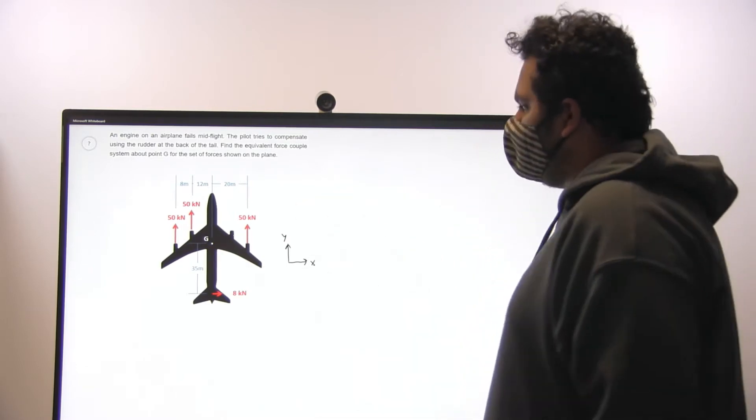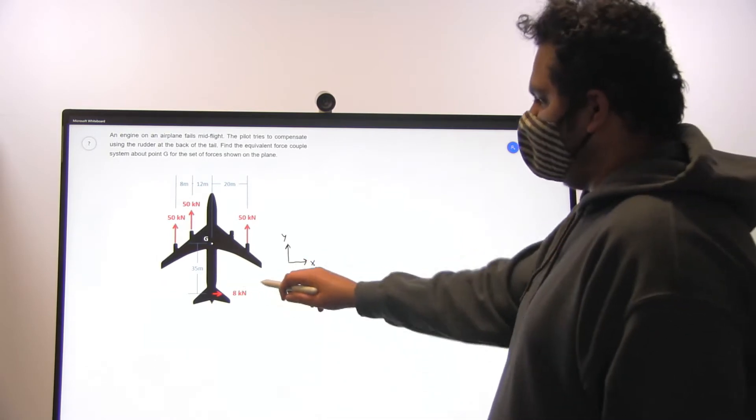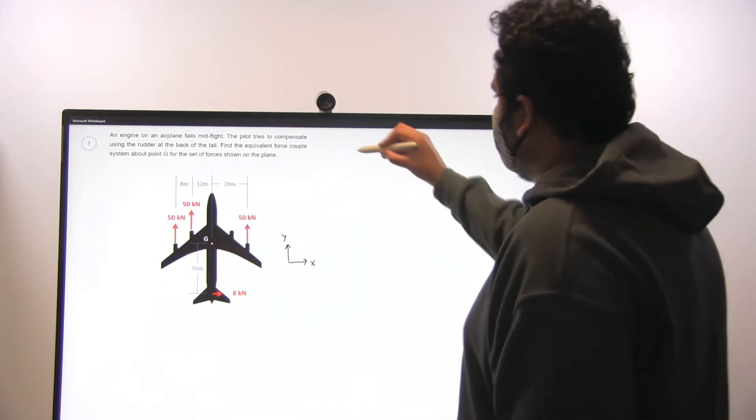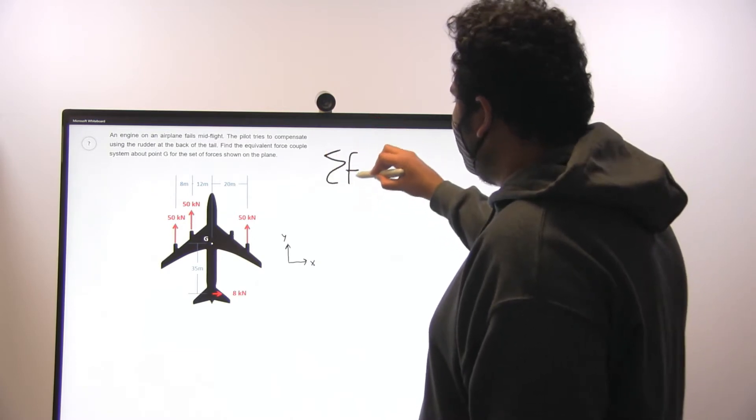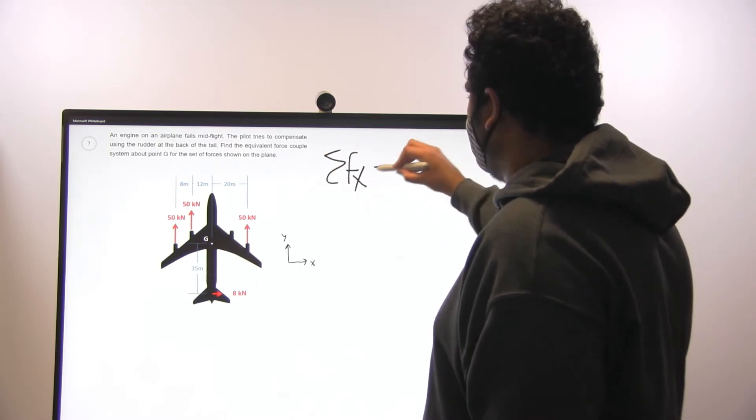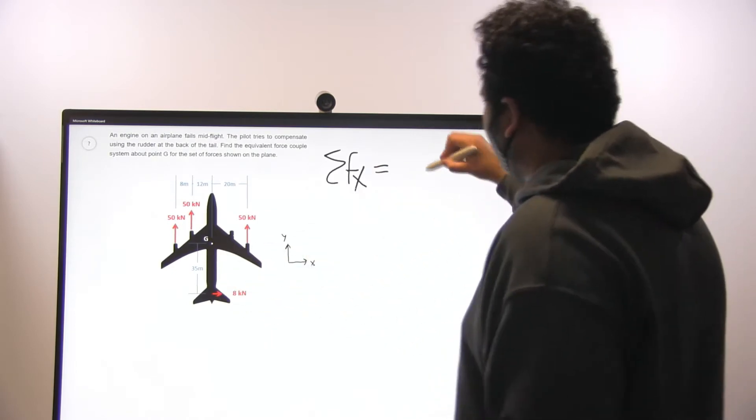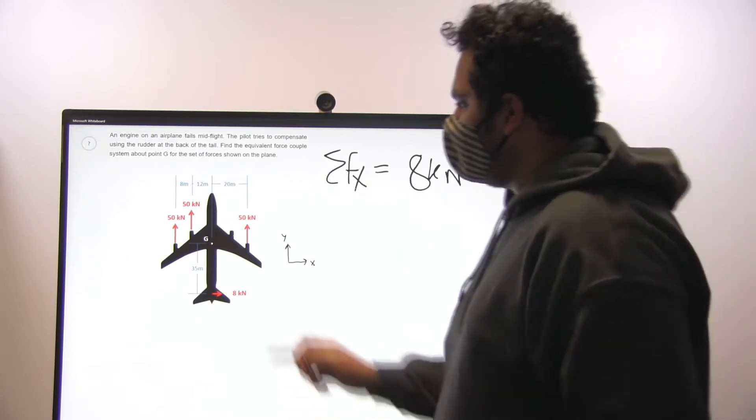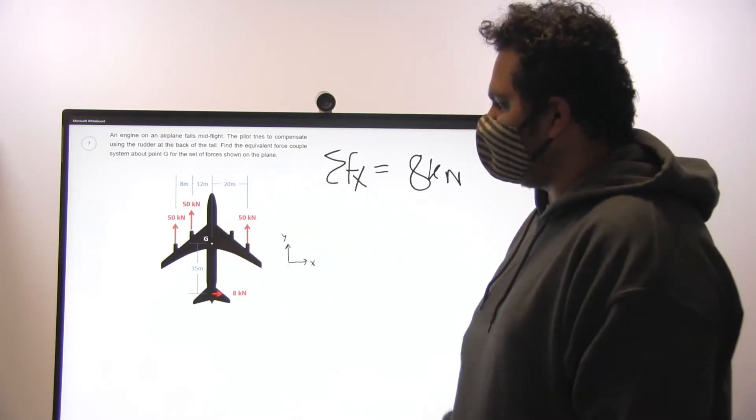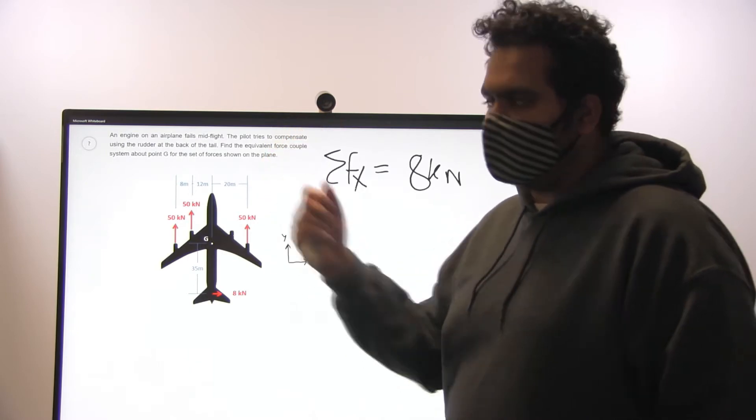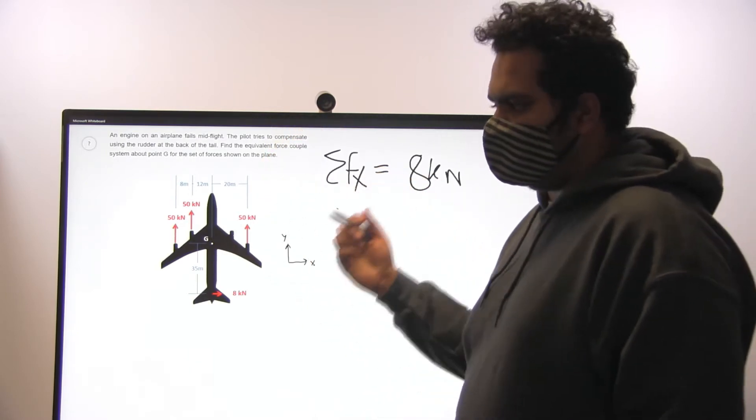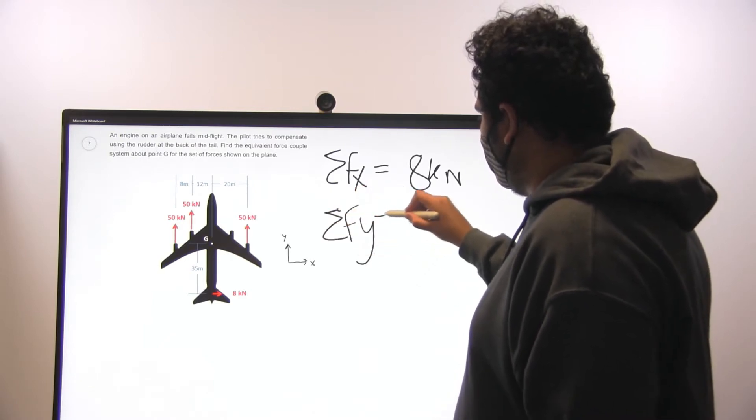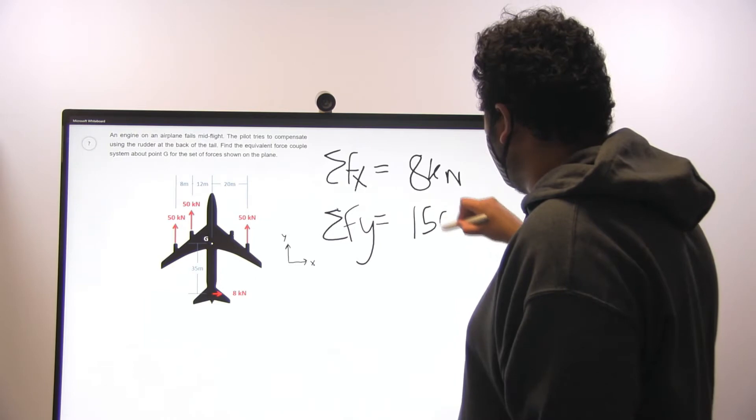We can start this problem by tackling sum of forces in the x direction and sum of forces in the y direction. Sum of forces in the x direction equals 8 kN. For the y direction, there are three 50 kN forces in the upwards positive y direction. If you add 50 plus 50 plus 50, it's 150. So sum of forces in the y direction equals 150 kN.